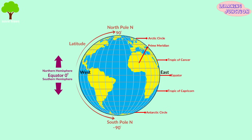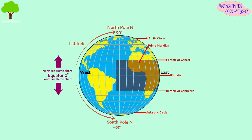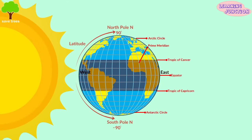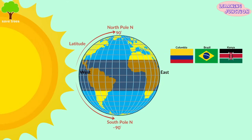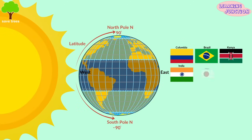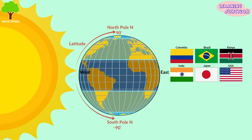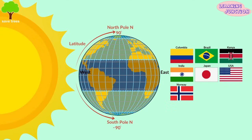These latitudes divide the Earth into climate zones: the Tropic zone, the hottest zone with countries like Colombia, Brazil, and Kenya; the Temperate zone, the moderate zone with countries like India, Japan, and the United States of America; and the Polar zone, the coldest zone with countries like Norway, Iceland, and Finland.